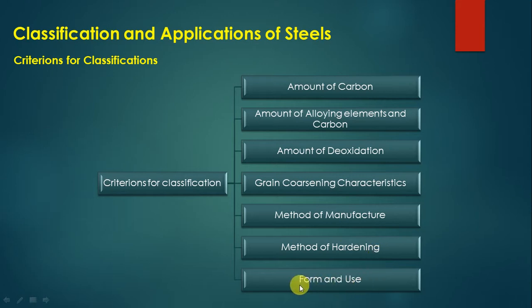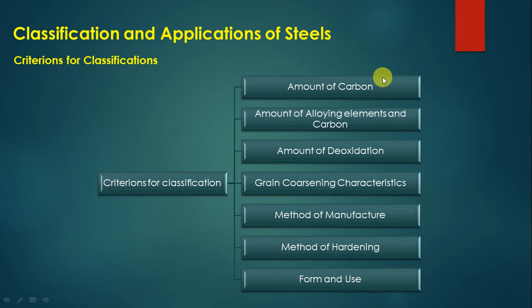The seventh criterion is the form and use — the typical application the steel finds. So the seven classification criteria are: amount of carbon, amount of alloying elements and carbon, amount of deoxidation, grain coarsening characteristics, method of manufacture, method of hardening, and form and use.